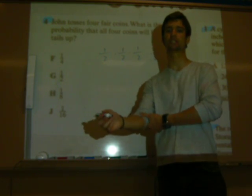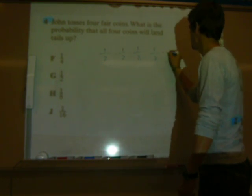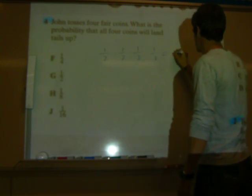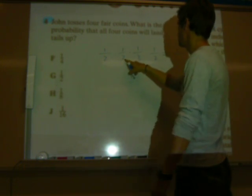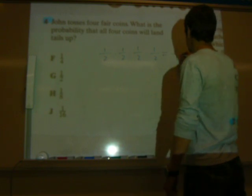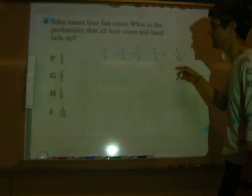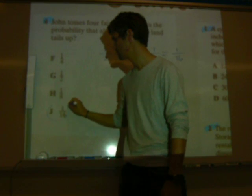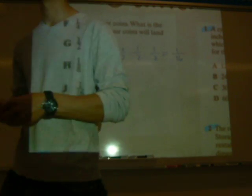Now you multiply all these together. Remember, when you multiply fractions, all you do is go straight across. So one times one times one times one is one. Two times two is four times two is eight times two is sixteen. Therefore, the probability is one and sixteen. Answer choice J for that one. Pretty simple.